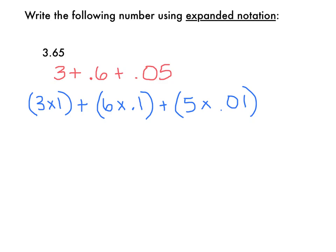So this would be another acceptable way to record this number in expanded notation. I also could record this number using parentheses, but not use decimals, but use fractions. So I would have 3 times 1 plus 6 times 1 tenths, plus 5 times 1 hundredth. All 3 of these would be appropriate responses to writing this number using expanded notation.